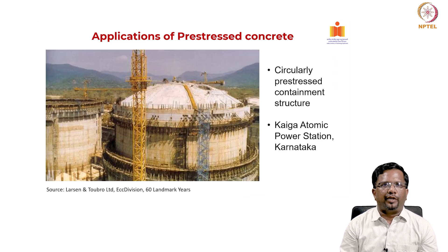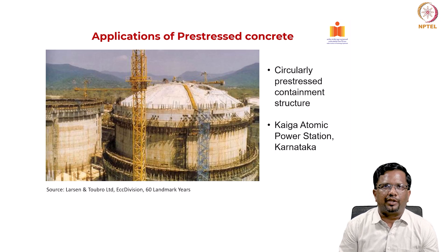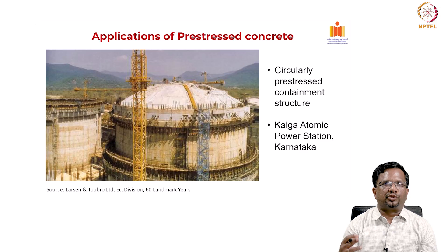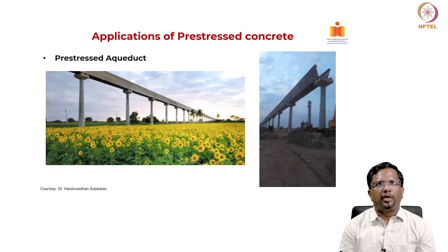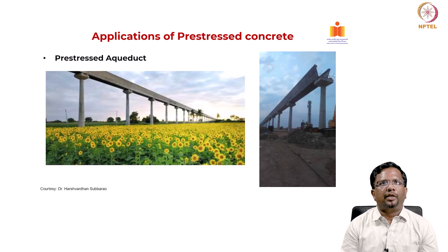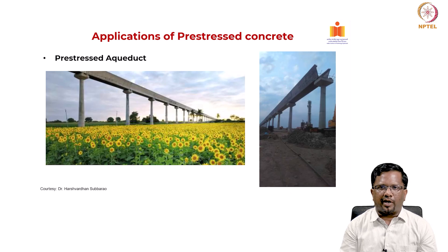The Kaiga atomic power station is an important application of a containment structure — a circularly pre-stressed containment structure built by Larsen and Toubro, similar to the cylindrical tank discussed. The roof can also be constructed using a post-tensioning system embedded within the concrete and stressed at a later point of time. Pre-stressed aqueducts can be constructed because they carry water and cracks must be avoided — if cracks form, moisture causes corrosion. Pre-stressing gives you a crack-free water-carrying aqueduct over very long spans.